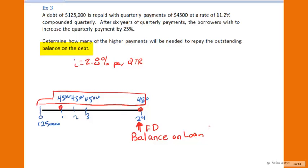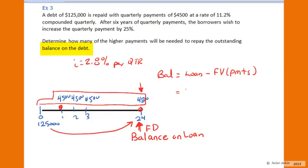The balance outstanding on the loan after year six will be the value of the loan at year six subtract the final value of the payments. I'm going to create an equation of values for that focal date: the balance outstanding equals the loan at that focal date minus the value of the payments at that focal date. So I'm going to start with the loan of $125,000 and add interest at one plus 2.8% for 24 periods — that's the compound interest factor (1+i)^n for 24 quarterly periods. From that I subtract the final value of $4,500 per quarter.